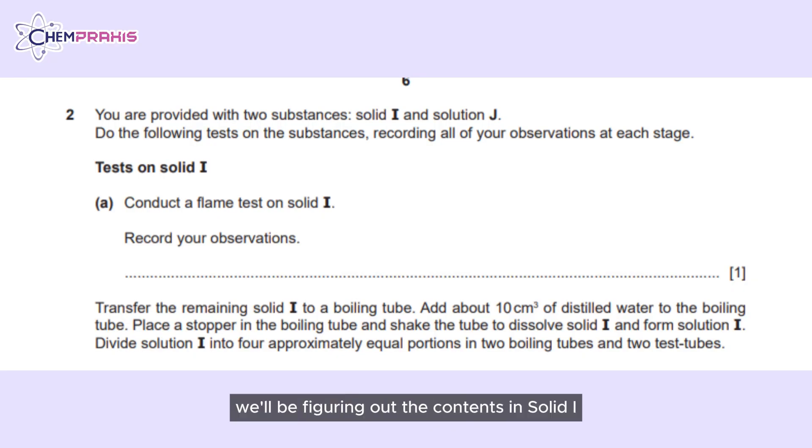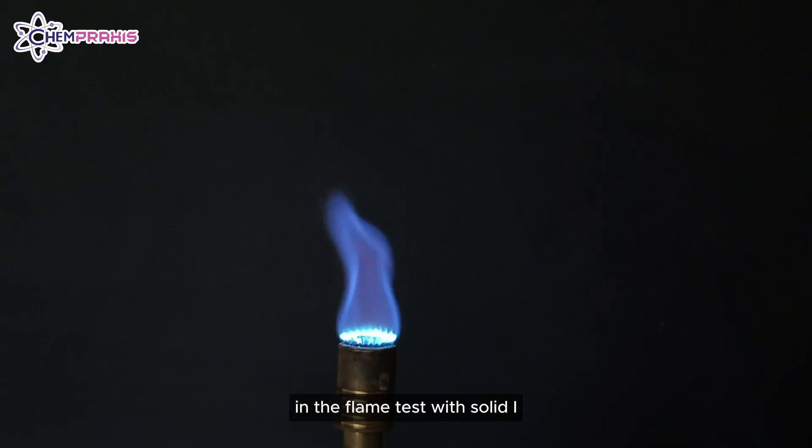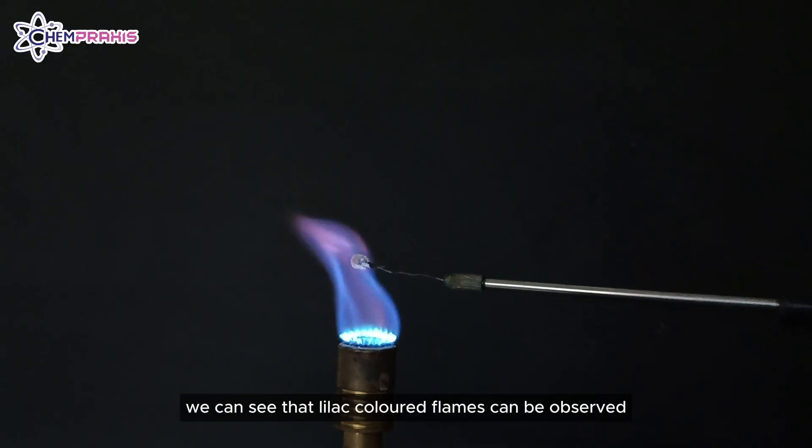For question 2, we'll be figuring out the contents in solid I and solution J. In the flame test with solid I, we can see that lilac coloured flames can be observed.